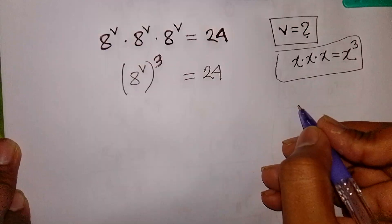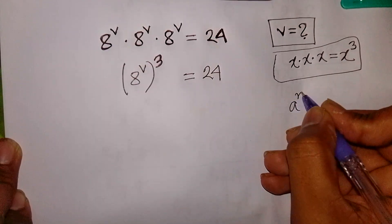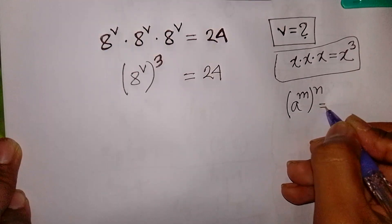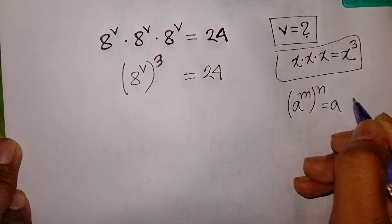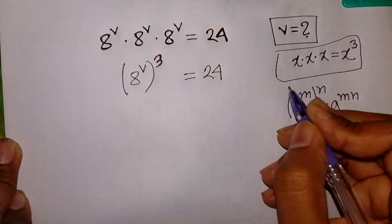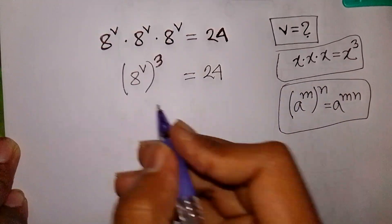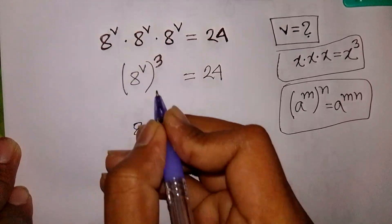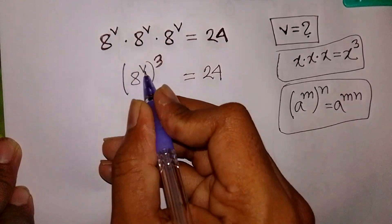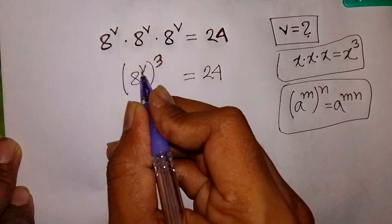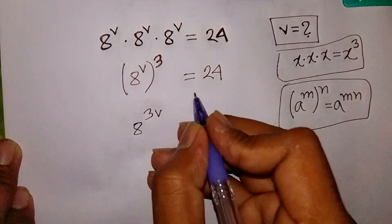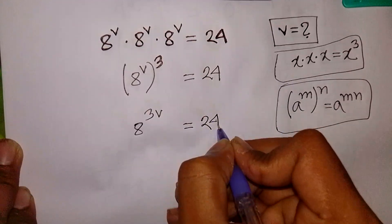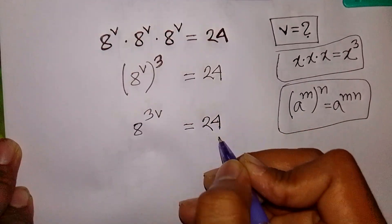Now we apply the exponential rule that a power m, bracket power n, is equal to a power m·n. So 8 power V, bracket power 3, is the same as 8 power 3V. That means 8 power 3V is equal to 24.